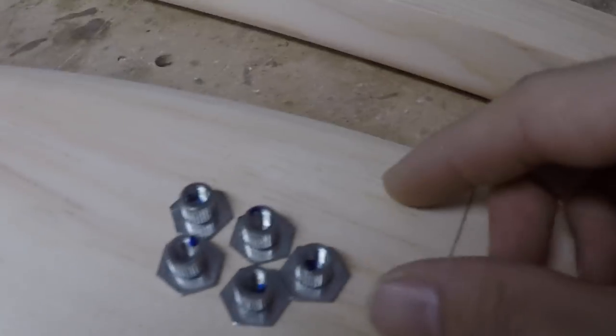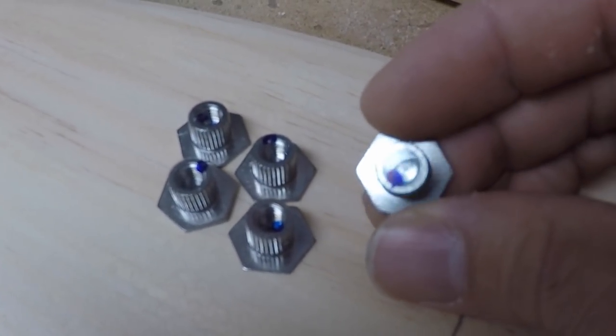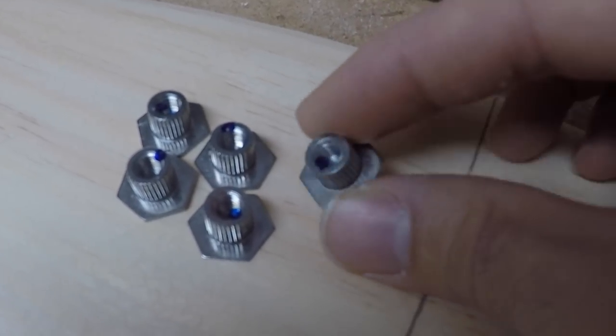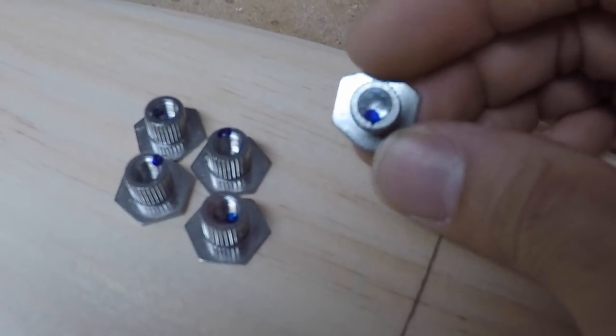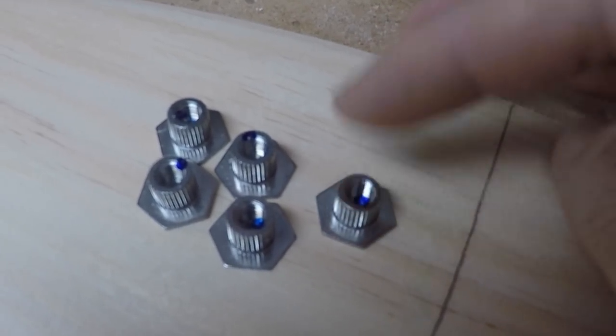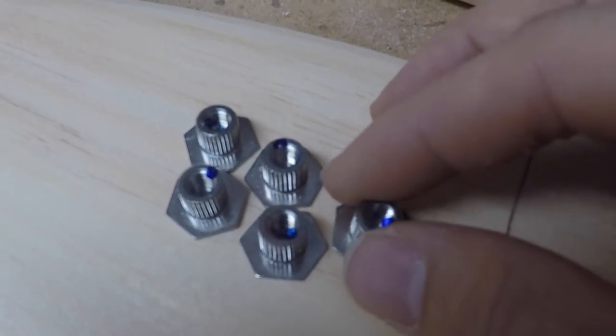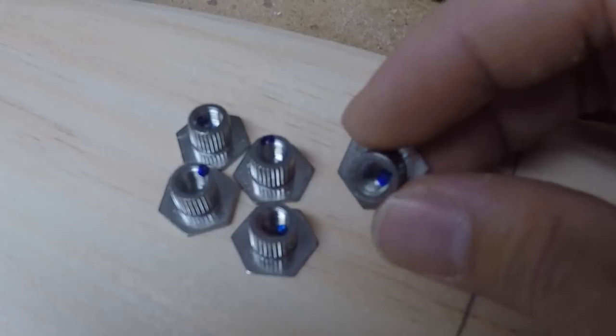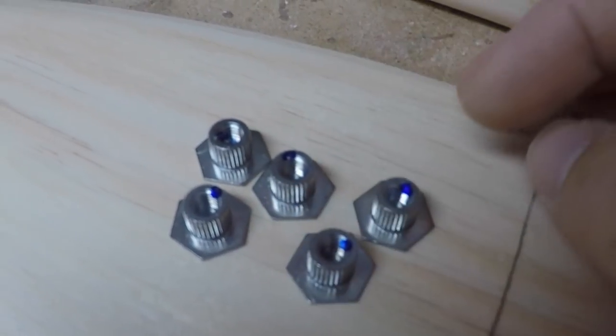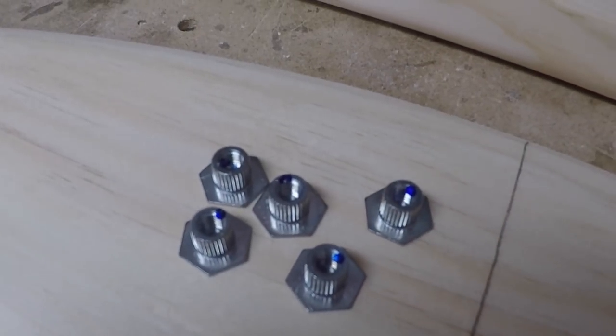One thing to take note of is on the top of these, each one has a piece of plastic that is stuck onto the top. This is the reason why I prefer to use these, because you don't need to worry about epoxy getting into the threads when you epoxy these into the fuselage. So it's important to leave those on and make sure that it is intact on each insert before you epoxy them into the fuselage.